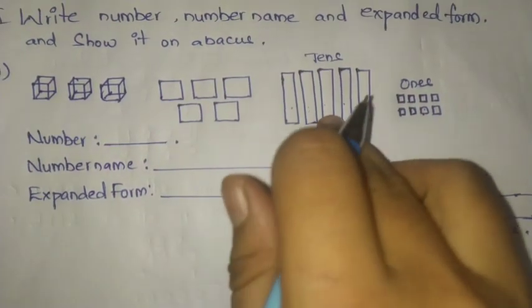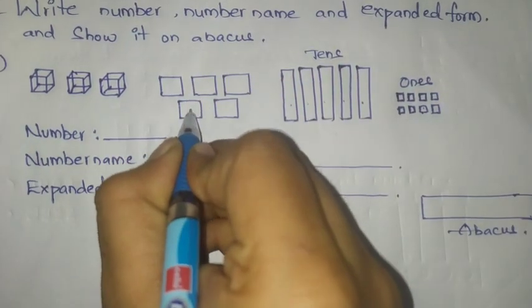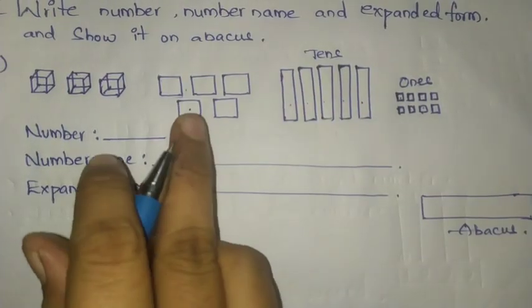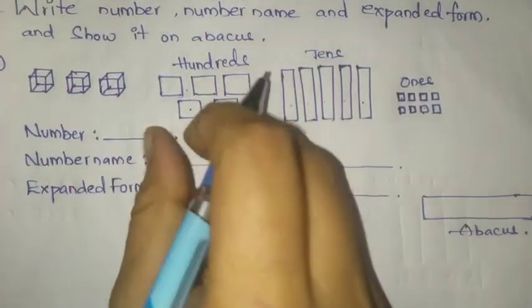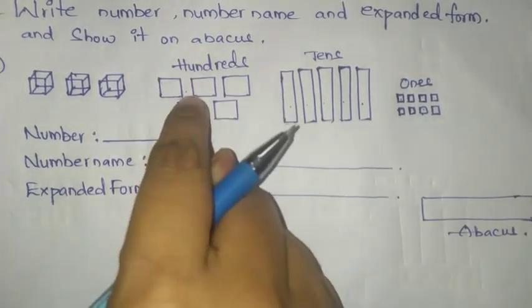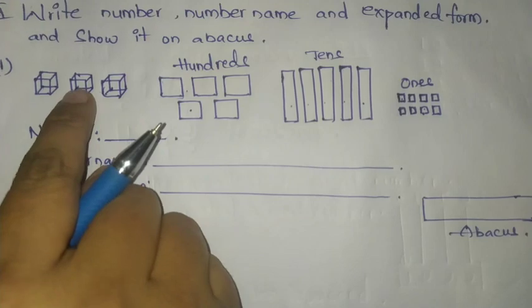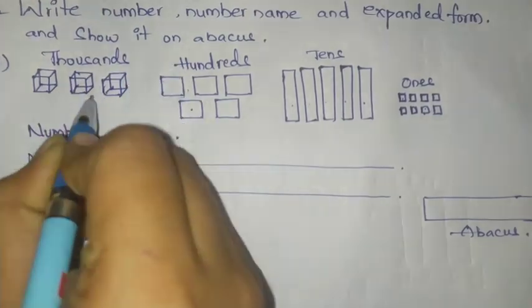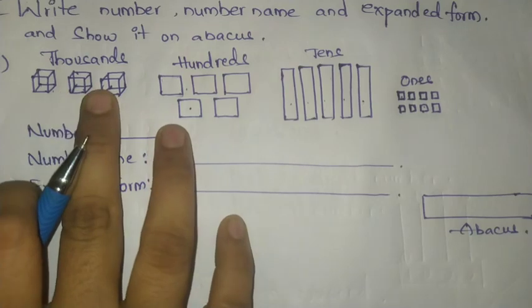Some big squares are there — these represent hundreds. In your textbook these are in purple color. And these cube shapes represent thousands.